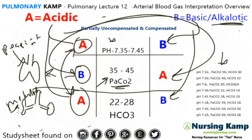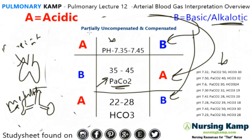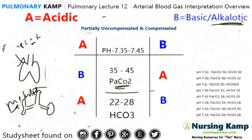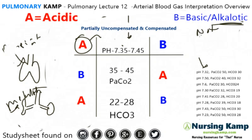The first step of any ABG interpretation is: where's the pH? You start with the pH first and circle the letter according to the pH. The first rule is — is the pH normal? If it is not normal, it is either going to be partially compensated or uncompensated, period. So if you are circling anything on the acidic side or the basic side, it's either going to be partially compensated or uncompensated.